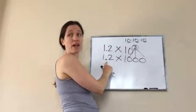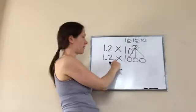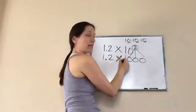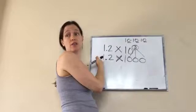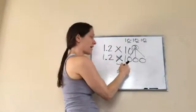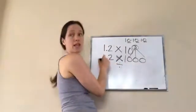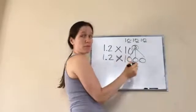Right. Which way? To the right. Very good. Because you're multiplying, you move it to the right. If you're dividing, you move it to the left. So, if this said divided by 1,000, you would move it to the left. But it doesn't. It says times.